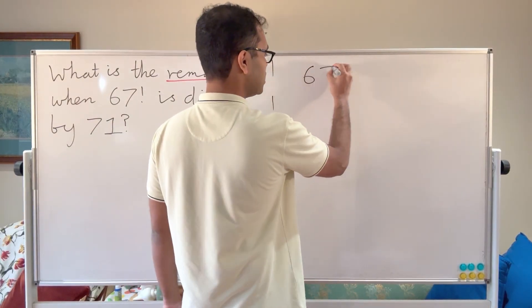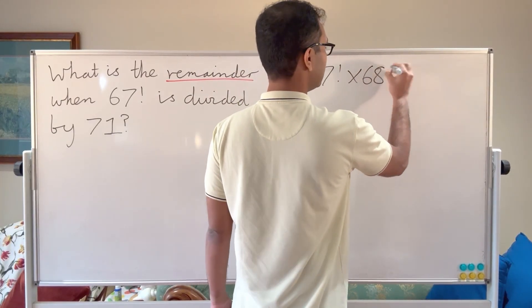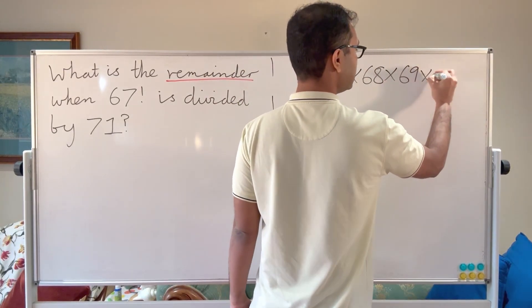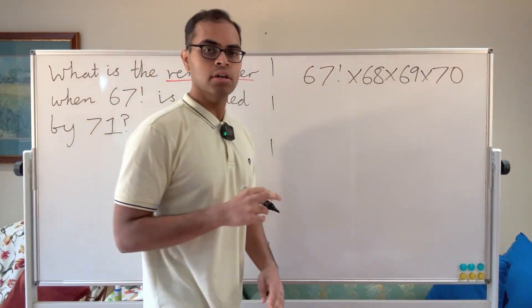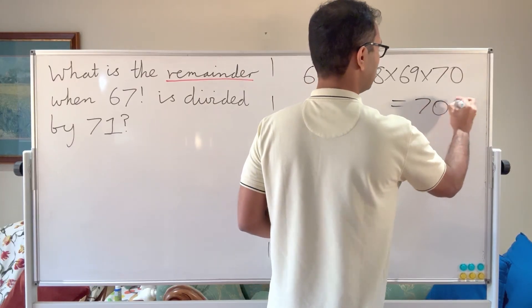So it's going to be a beautiful trick, and you're going to love this trick. We're going to multiply 67 factorial times 68 times 69 times 70. That product, of course, is just going to equal 70 factorial.